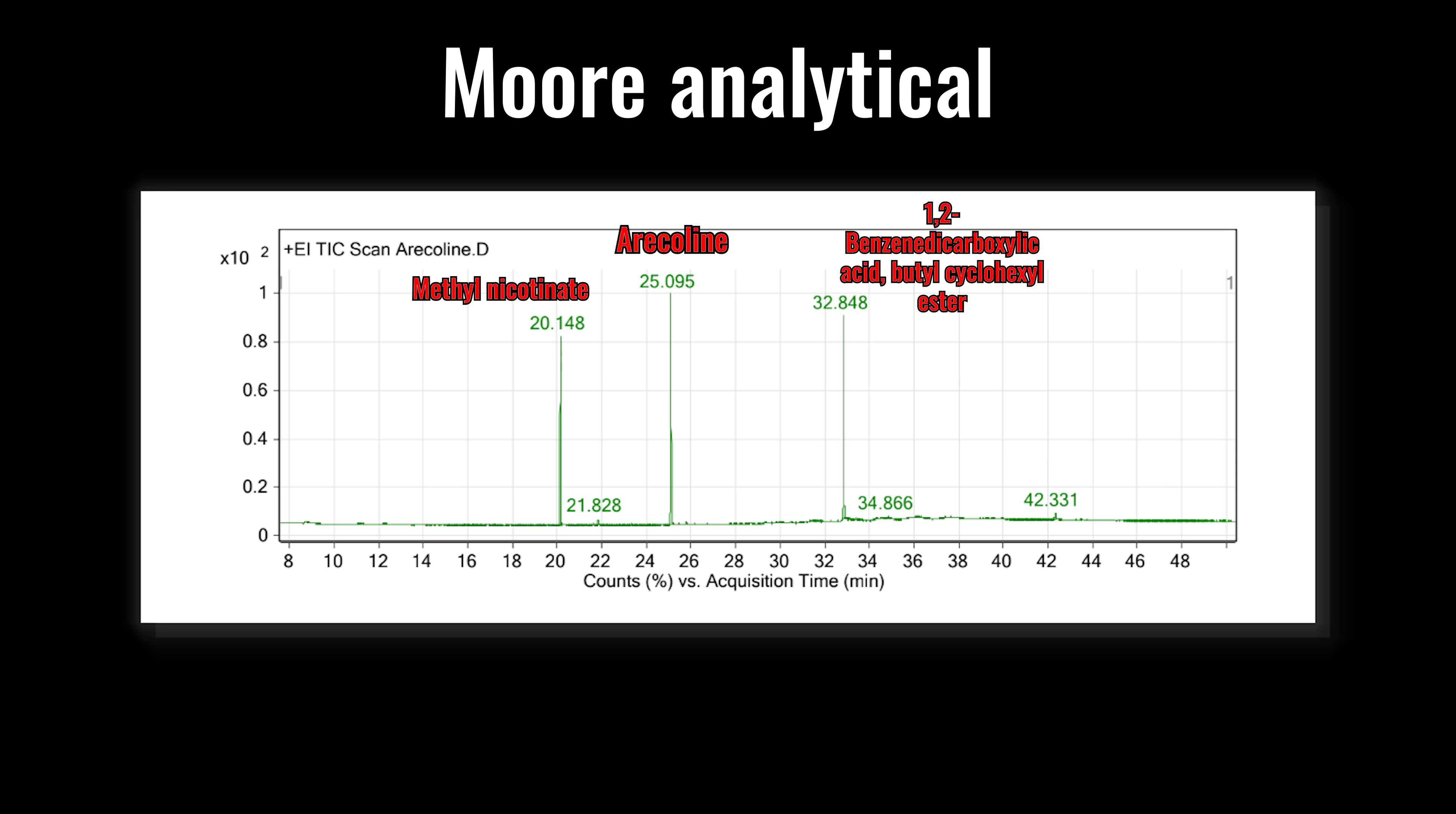Now, we do have arecoline, which is at 25.095 minutes. Now, we also have methyl nicotinate and 1,2-benzene-dicarboxylic acid butyl cyclohexyl ester. Starting with methyl nicotinate, something happened, and the N-alkylation wasn't there at the end.